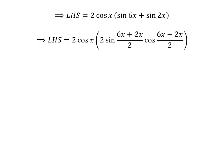Again applying the above sum-to-product identity gives us: left-hand side is equal to 2 times cosine of x times 2 times sine of (6x plus 2x)/2 times cosine of (6x minus 2x)/2.